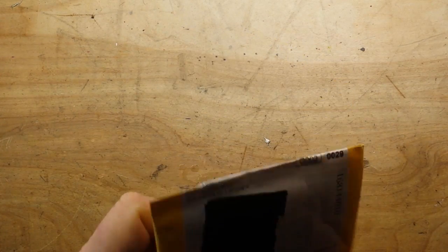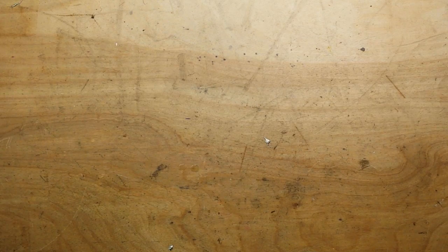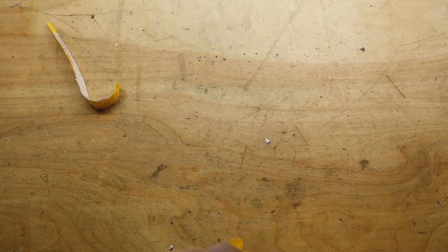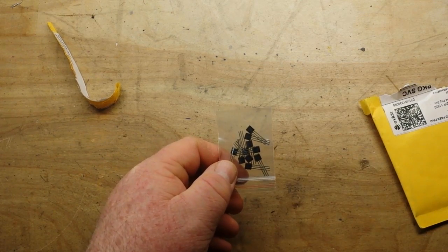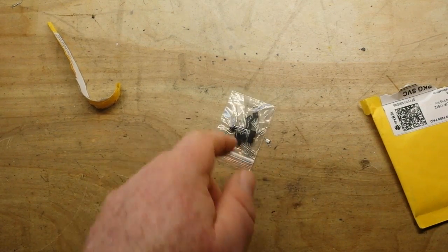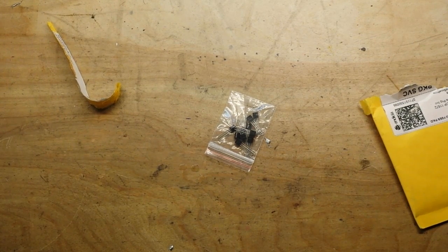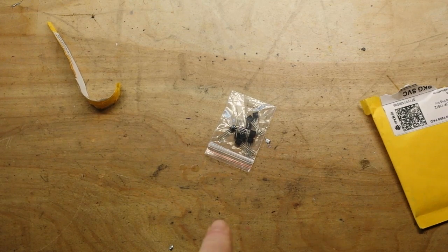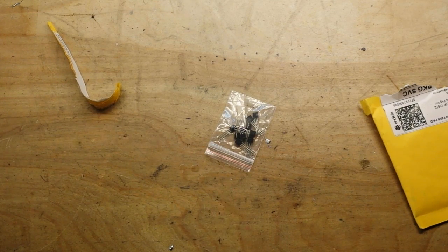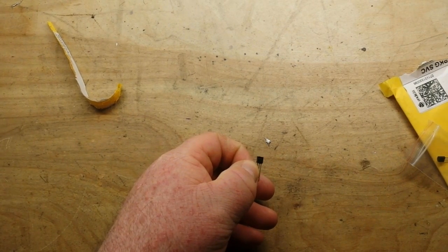Alright, first off is this little package. What do we have? Transistors, but not NPN or PNP, not BJTs. They are JFETs or these could be unijunctions. I ordered both, have to look it up and see which one it is. Alright, these are labeled J201 so they are the JFETs, the junction FETs, N-channel.